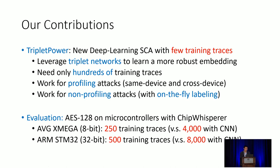We collected data from microcontrollers running AES-128 using ChipWhisperer. For XMEGA, our method only requires 250 training traces, while CNN requires at least 4,020 traces. For STM32, our method requires only 520 traces, but CNN requires at least 8,000 training traces.